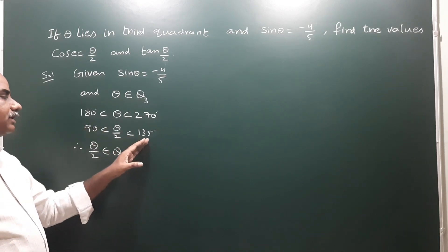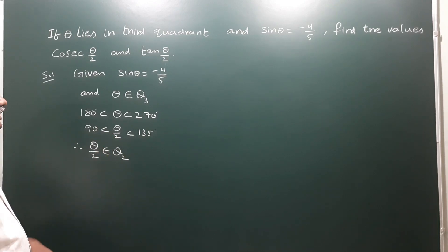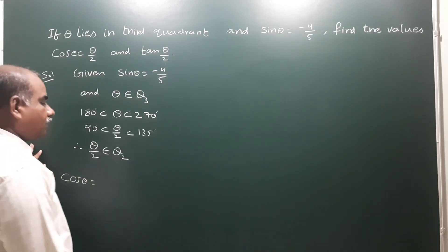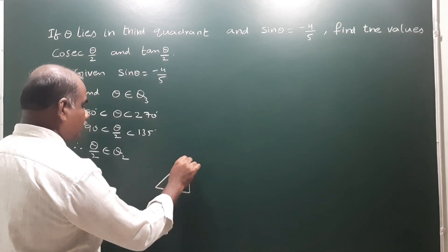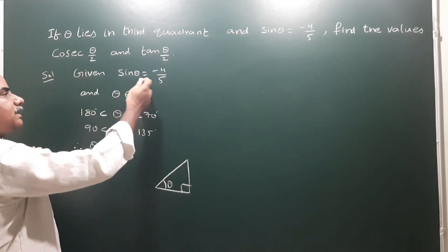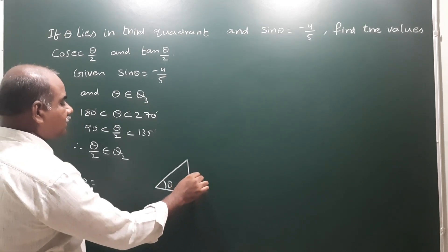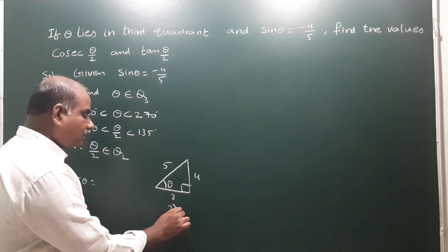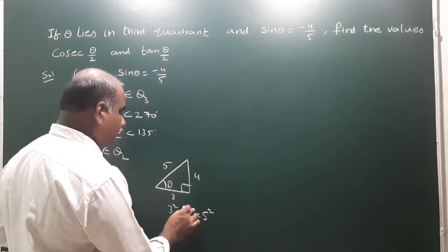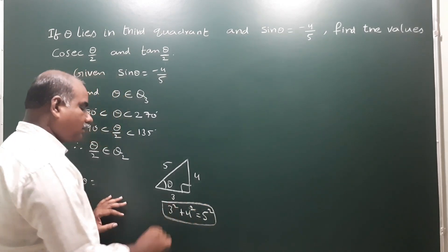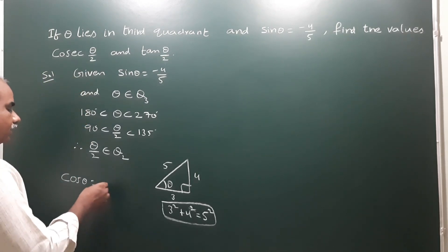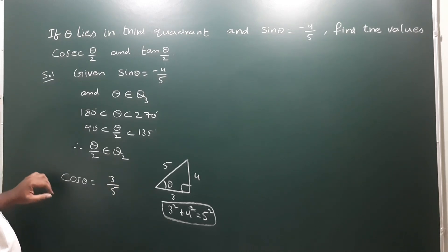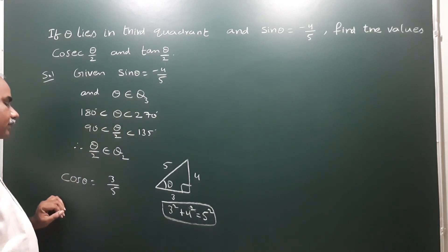Since 90 to 135 is within the second quadrant, theta/2 belongs to Q2. Next, we find the value of cos theta. We draw a right-angle triangle: sin theta is minus 4 by 5, so opposite side is 4 and hypotenuse is 5. Since 3 squared plus 4 squared equals 5 squared, the adjacent side is 3. Therefore cos theta equals adjacent by hypotenuse, and since theta is in Q3, cos is negative, so cos theta equals minus 3 by 5.